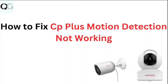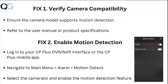In this video, we're looking at how to fix CP Plus motion detection not working. Step one: verify camera compatibility. Ensure the camera model supports motion detection. Refer to the user manual or product specification.